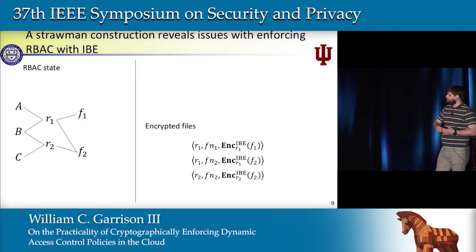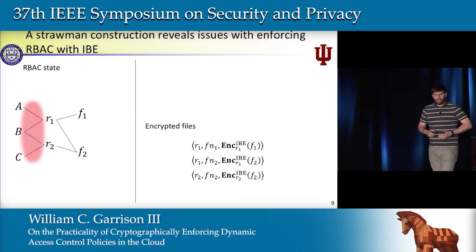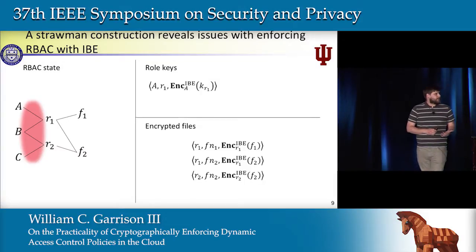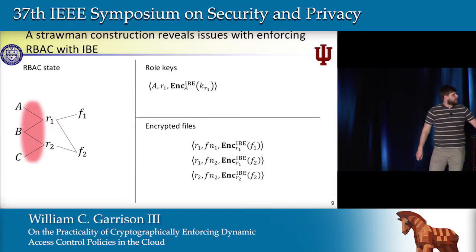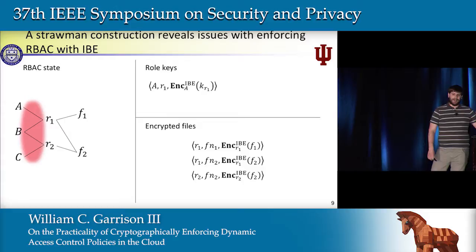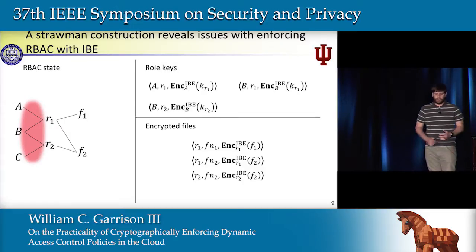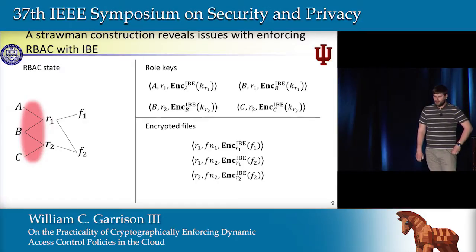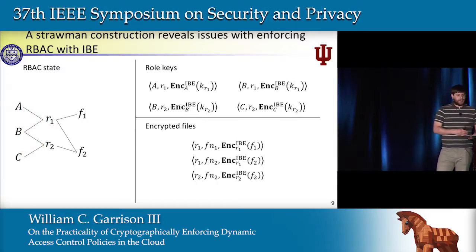Now we have to distribute these role keys to users in that role. We can do that by encrypting these keys as key bundles to their individual identities. So I can encrypt the private key for identity role 1 to the identity for user A. Similarly, user B should have access to the private keys for roles 1 and 2, and C should have access to the private key for role 2.